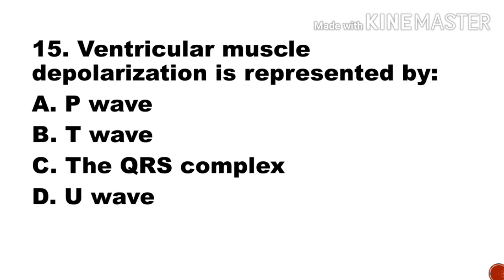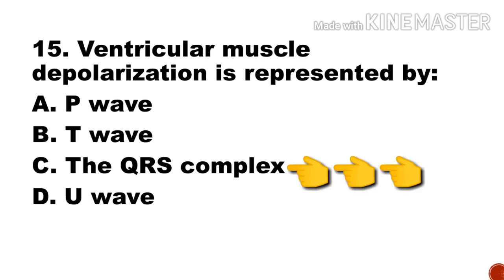Next question: Ventricular muscle depolarization is represented by — a) P wave, b) T wave, c) QRS complex, d) U wave. Option c, the QRS complex, is the right answer.